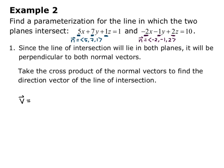So my direction vector v equals the cross product, so the determinant of matrix i, j, k; 5, 7, 1, that first normal vector; and -2, -1, 2, the second normal vector. So I find v by taking this cross product, so I get i times (14 + 1) minus j times (10 + 2) plus k times (-5 + 14). If you need a refresher on how to do cross product, please go back to the cross product video.